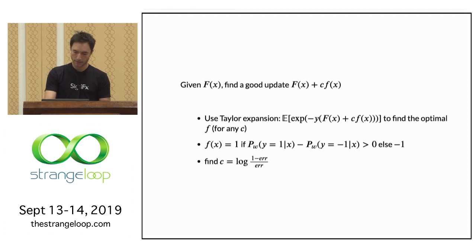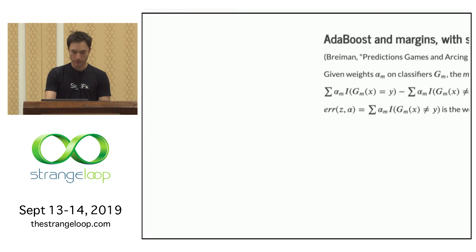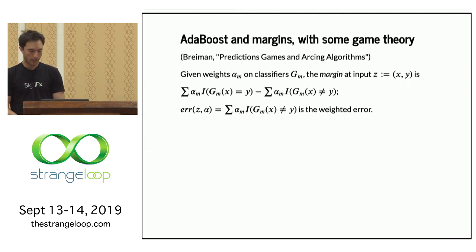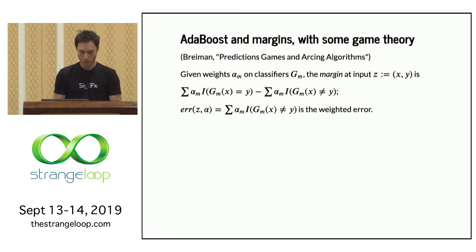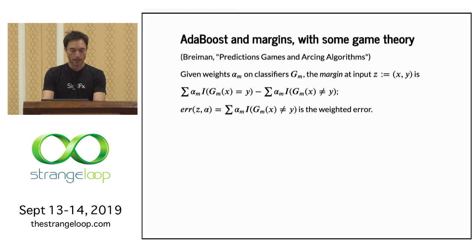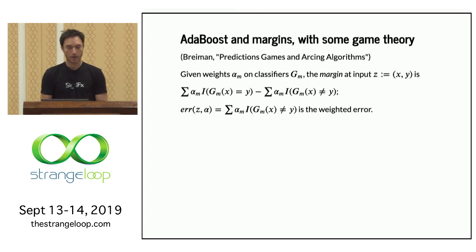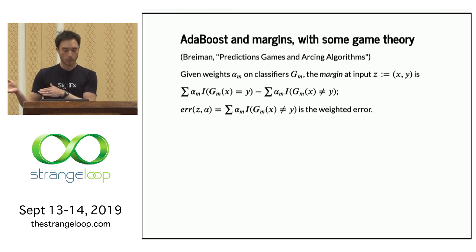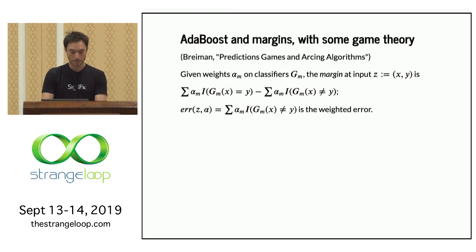Now a slightly different view of the boosting procedure from game theory — from a paper called 'Prediction Games.' If we have a bunch of weights and classifiers resulting from a boosting procedure, we define the margin at some input as the weighted correctness minus the weighted error: for every example where the classifier is correct, we add that weight; for every example where it's wrong, we subtract that weight. This defines the margin at some input, and then you can produce the weighted error of the classifier as a whole.